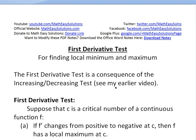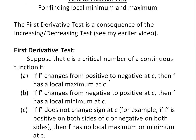The first derivative test goes like this: suppose that c is a critical number of a continuous function f. A critical number, as shown in my earlier video, is basically any number where the derivative is zero or does not exist. Now you have three parts of this first derivative test.